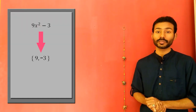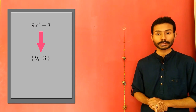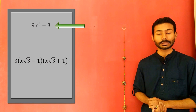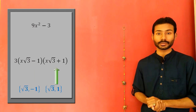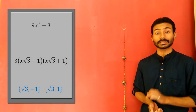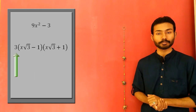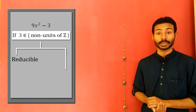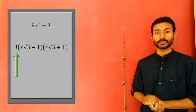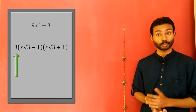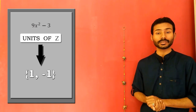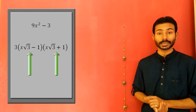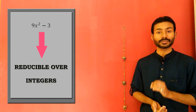Let's now take this polynomial whose coefficients are all integers. Just like in a previous example, this polynomial can be expressed as a product of these factors. The degrees of both these factors are less than the degree of the given polynomial, but the coefficients of these two factors are not all integers. So it's tempting to assume that the given polynomial is irreducible over integers. But what about this third term? Is this a non-unit integer factor of the given polynomial? The only unit elements in the set of all integers are 1 and minus 1, so 3 is indeed a non-unit element. This polynomial over integers can therefore be expressed as a product of two non-integer factors and one integer factor, so the given polynomial is reducible over integers.